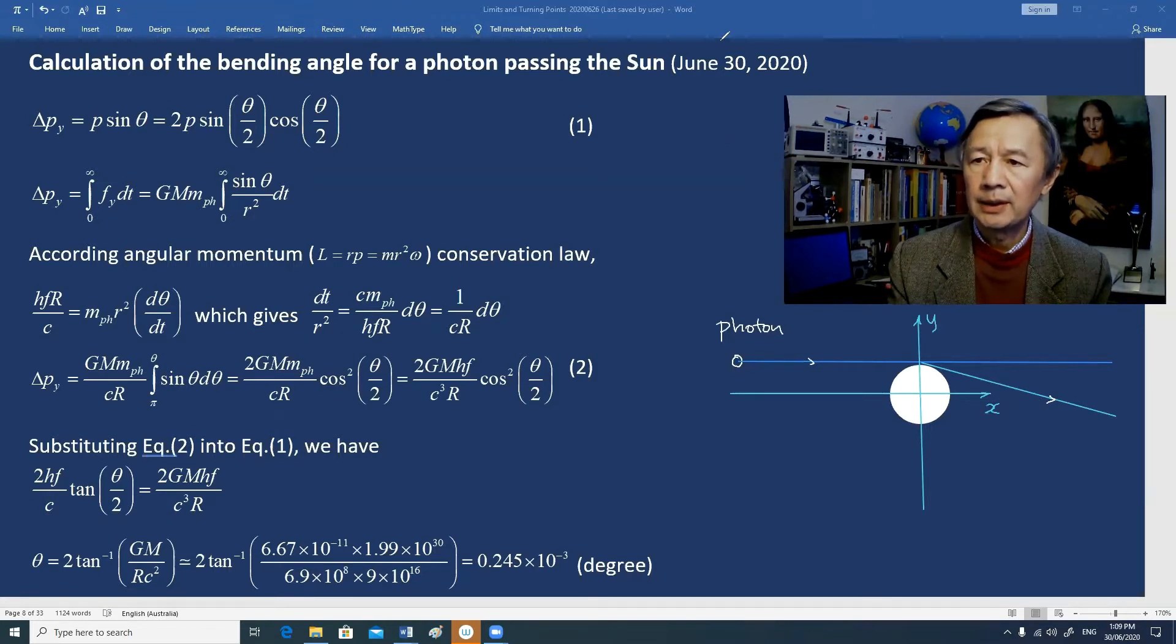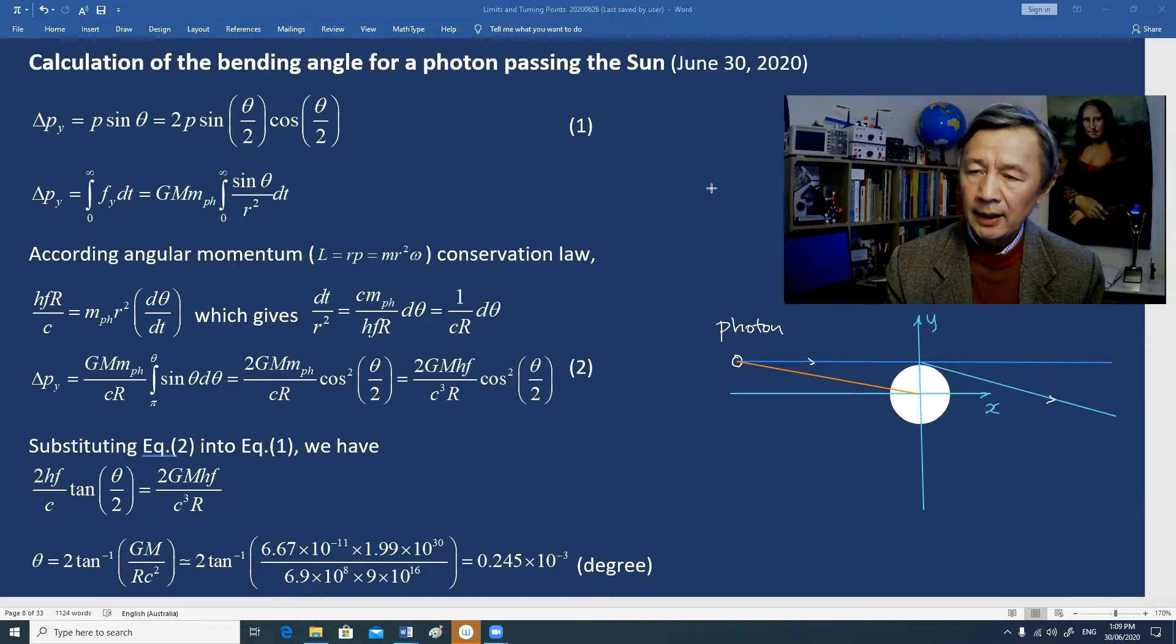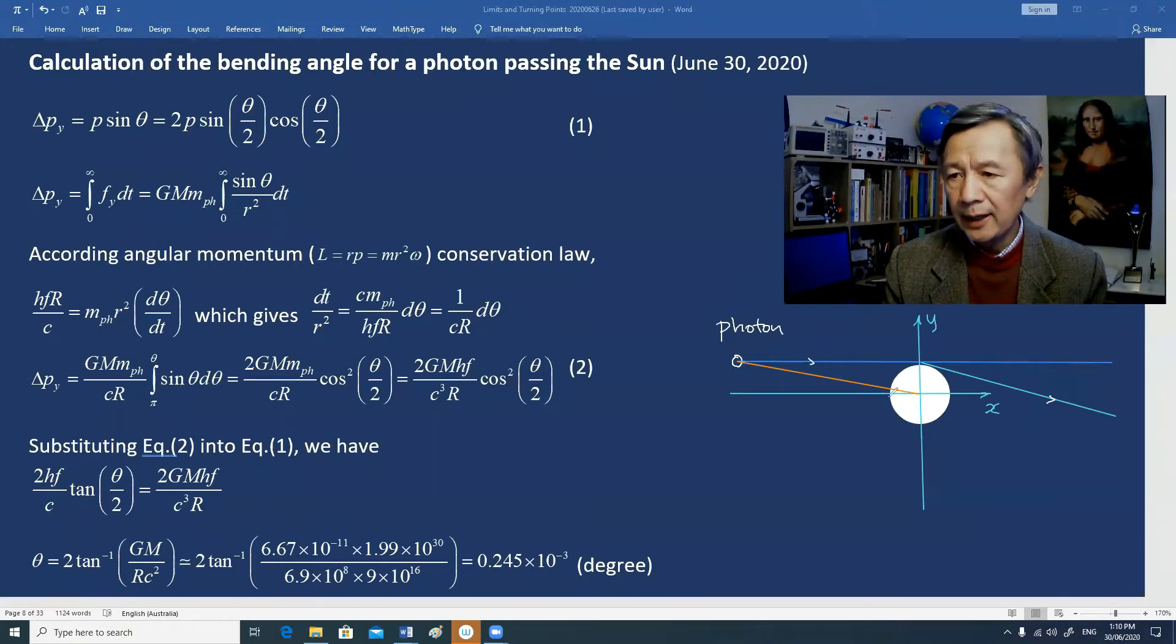The position of the photon can be determined by the distance between the Sun and the photon. Here we use angle to describe this - this is theta.